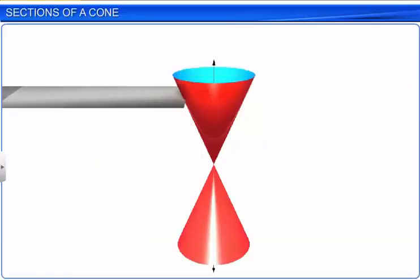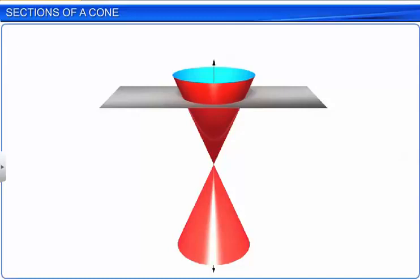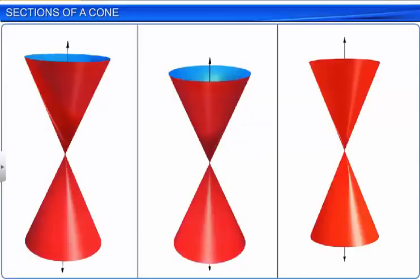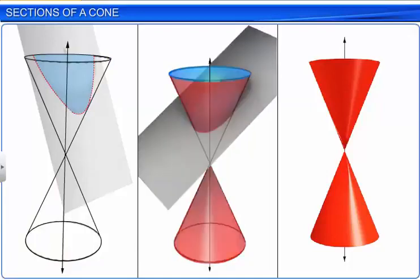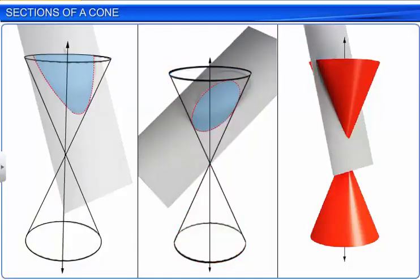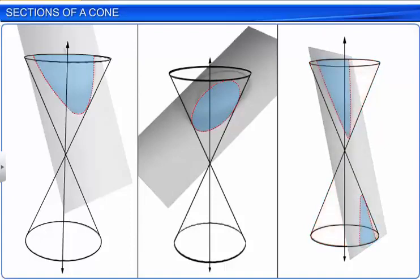When a plane intersects a cone, it cuts a section from the cone. This section is called a conic section or a conic. We get different kinds of conic sections of different shapes depending on the position of the intersecting plane with respect to the cone and the angle it makes with the vertical axis of the cone.